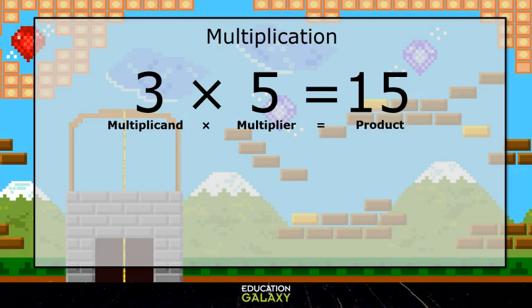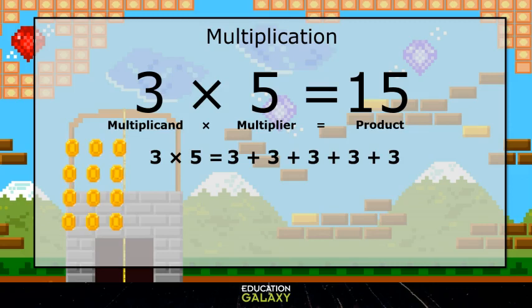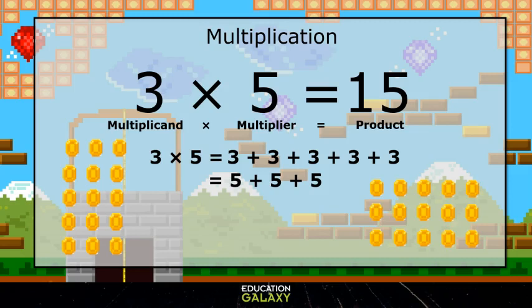Multiplication represents a repeated addition. So 3 times 5 can be represented as 3 plus 3 plus 3 plus 3 plus 3, or 5 groups of 3. It can also be represented as 5 plus 5 plus 5, or 3 groups of 5. Either way, we get an answer of 15.